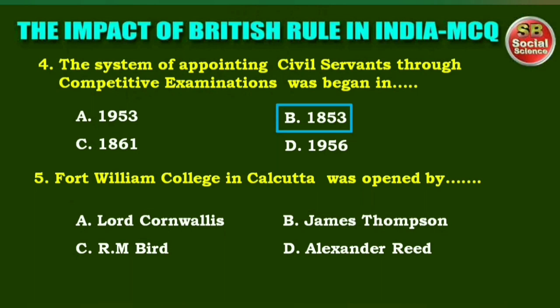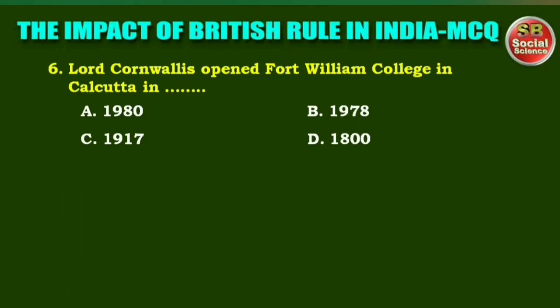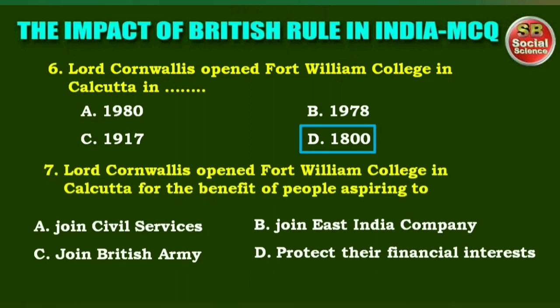Next one: Fort William College in Calcutta was opened by — options are: (a) Lord Cornwallis, (b) James Thompson, (c) R.M. Bird, (d) Alexander Reed. The right answer is option A: Lord Cornwallis. Next question: Lord Cornwallis opened Fort William College in Calcutta in — options are: 1980, 1978, 1917, 1800. The right answer is option D: 1800.